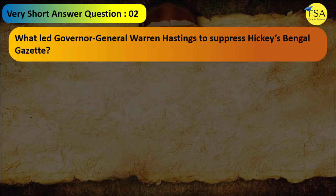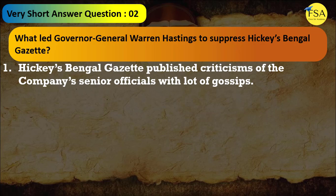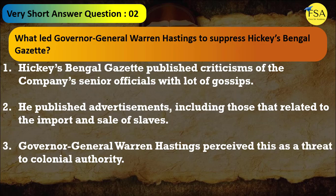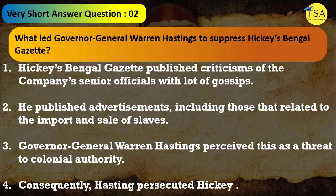Question 2: What led Governor General Warren Hastings to suppress Hickey's Bengal Gazette? Hickey's Bengal Gazette published criticism of the company's senior officials along with gossip, and published advertisements related to the import and sale of slaves. Warren Hastings perceived this as a threat to colonial authority, so he persecuted and imprisoned Hickey.